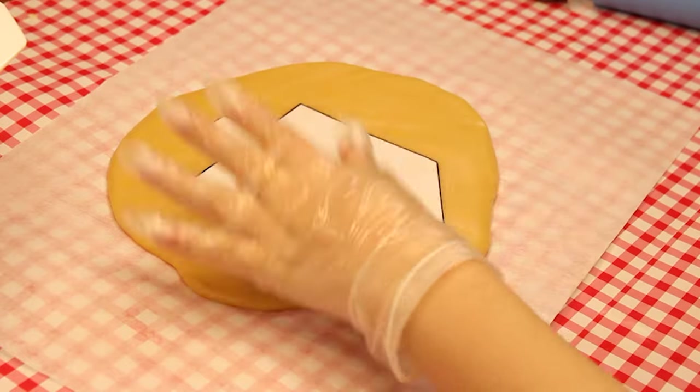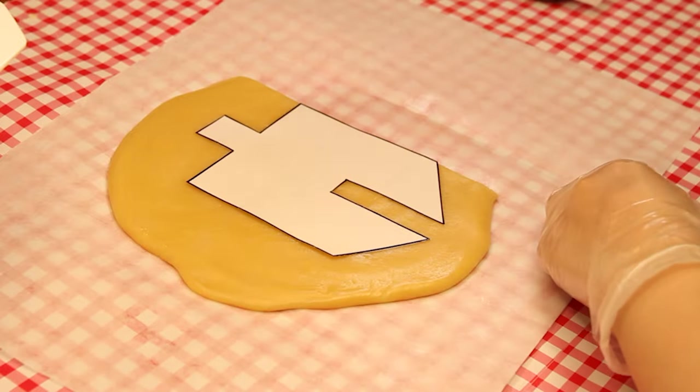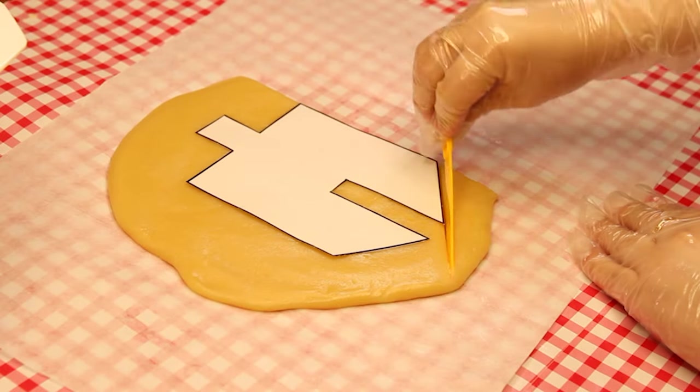Using the plastic knife, cut around the edges of the tracer, including the slit that goes through the middle of the dreidel. Remove the extra dough and put it to the side.